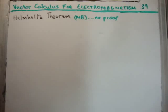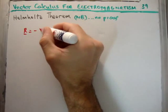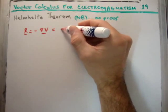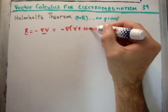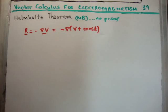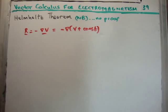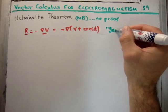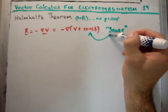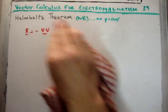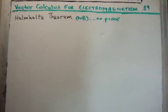When a field satisfies R = -∇V, the potential V is not uniquely defined, because we can add a constant to V and get the same vector field — the derivative of a constant is zero. We can add and subtract constants freely without changing the field itself. This is why the potential formulation is so powerful: we talk about gauges, where choosing a different value for this constant corresponds to a different gauge.